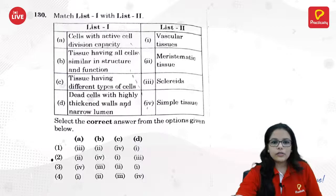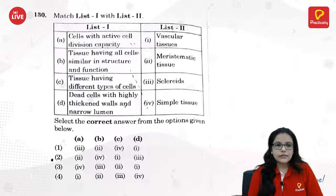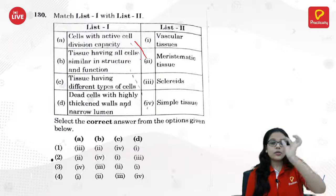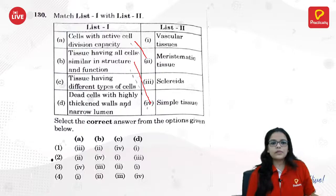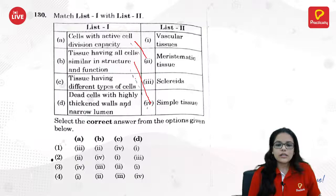Regarding plant tissues: cells with active cell division capacity — that is meristematic tissue, found even in roots. Tissues having all cells similar in structure and function — that is simple tissue. Tissues having different types of cells — that is complex tissue. Dead cells with highly thickened walls and narrow lumens.